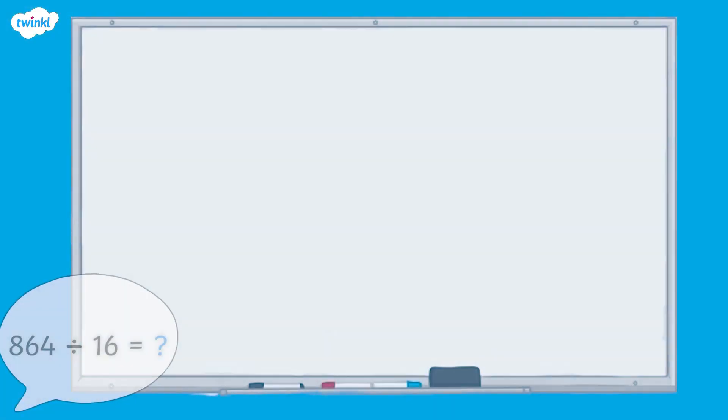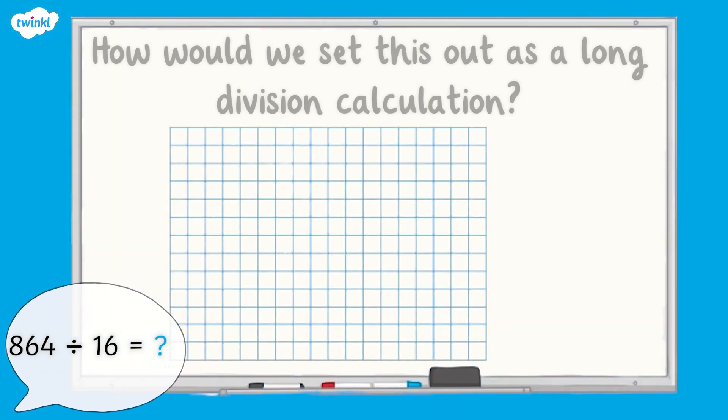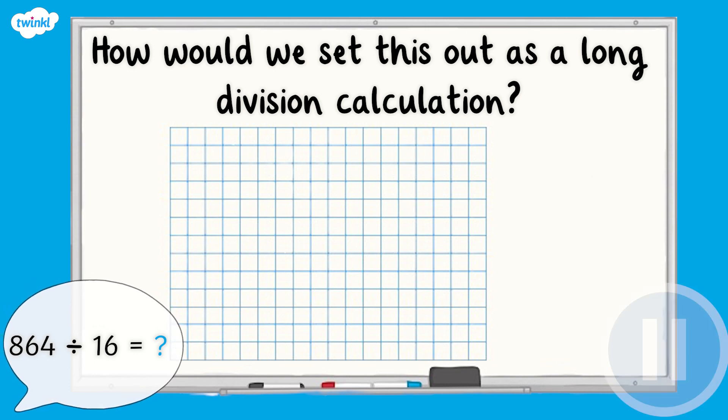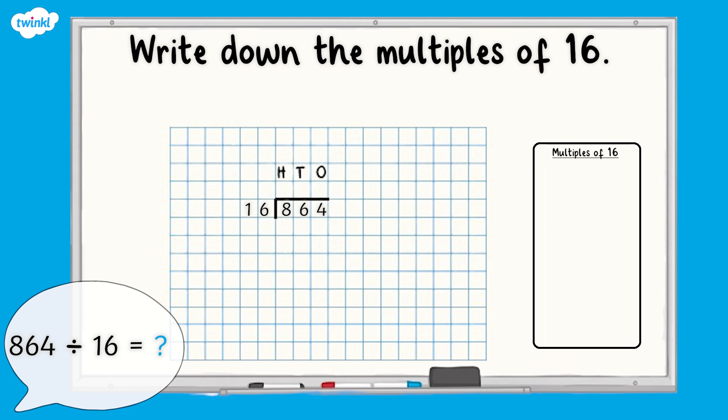Now it's your turn. Let's work through this division calculation together. The calculation is 864 divided by 16. How would we set this out as a long division calculation? Well, first of all we need to list the multiples of 16. Pause here and write the first 10 multiples of 16. Think carefully about which times table would help you with this.